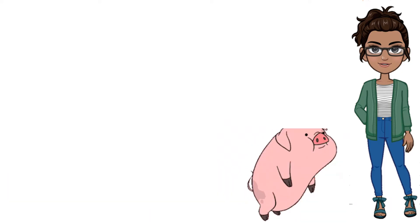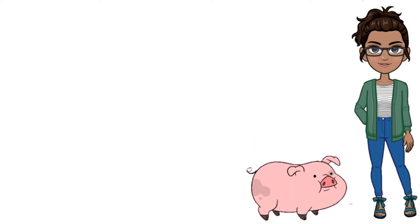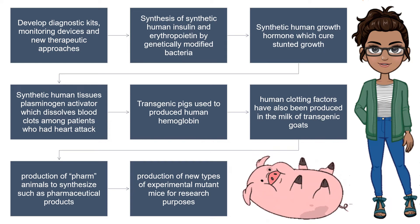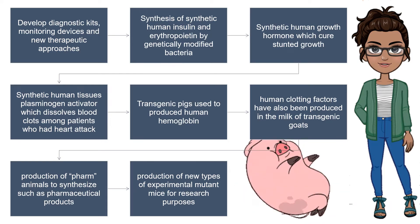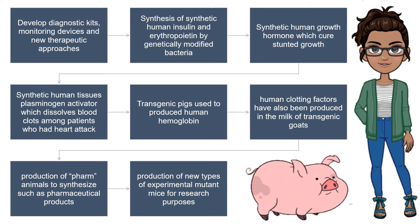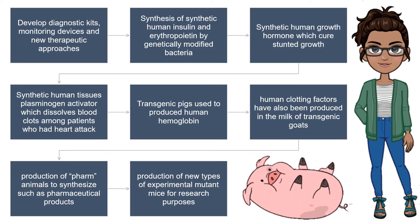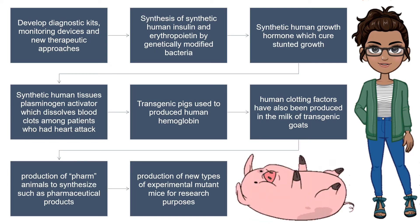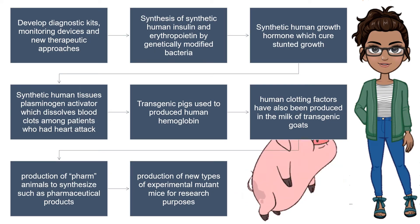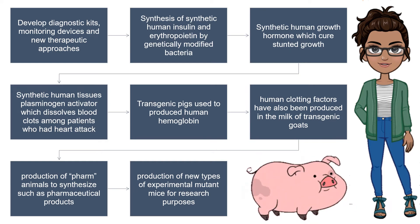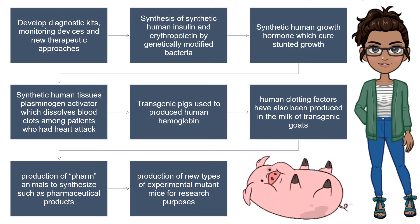Recombinant DNA technology plays a vital role in improving health conditions by developing new vaccines and pharmaceuticals. Treatment strategies are also improved by developing diagnostic kits, monitoring devices, and new therapeutic approaches. Examples include the synthesis of synthetic human insulin and erythropoietin by genetically modified bacteria, human growth hormone which cures stunted growth, tissue plasminogen activator which dissolves blood clots in heart attack patients, transgenic pigs used to produce human hemoglobin, human clotting factors produced in the milk of transgenic goats, and production of farm animals to synthesize pharmaceutical products and new types of experimental mutant mice for research purposes.